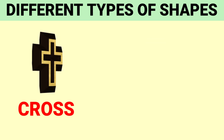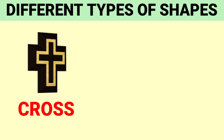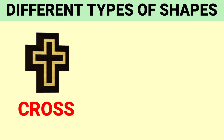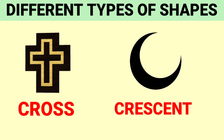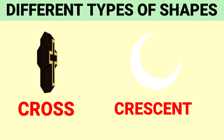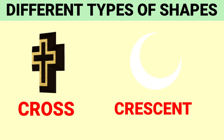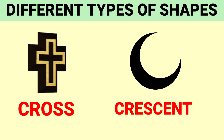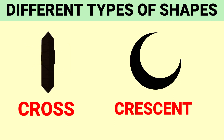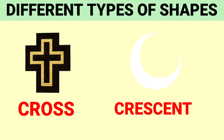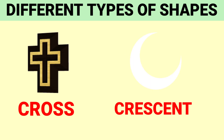Cross, C-R-O-S-S, Cross. Crescent, C-R-E-S-C-E-N-T, Crescent. So these all are 2D shapes. Thank you.